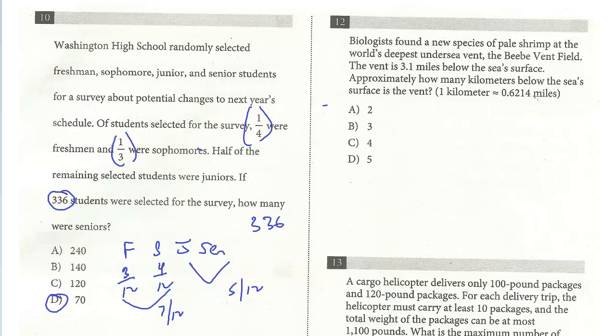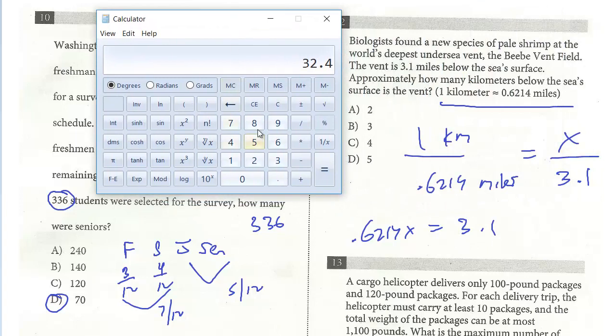This is just like the last question. We could set up a ratio and cross multiply, as long as you're consistent. We're given that one kilometer equals 0.6214 miles. We're told the vent is 3.1 miles, so we line these up. We'll see how many kilometers that is, x. We just cross multiply, so 0.6214x equals 3.1. So 3.1 divided by 0.6214, looks like almost 5. It says approximately, so it's very close to 5. That is the answer.